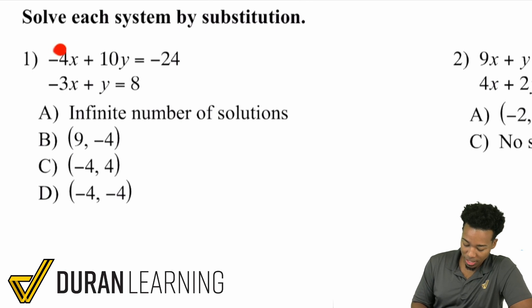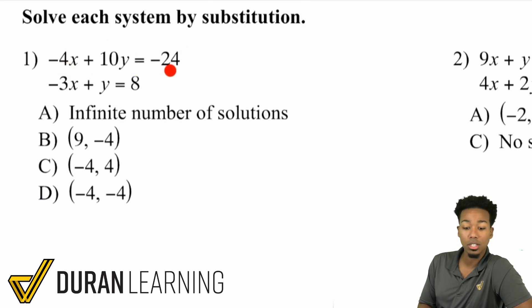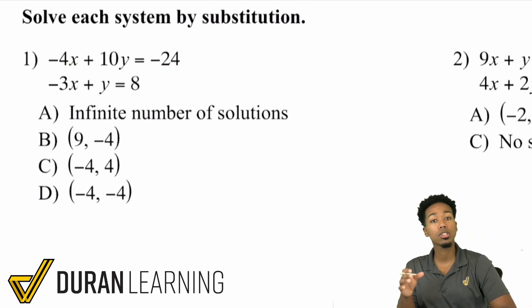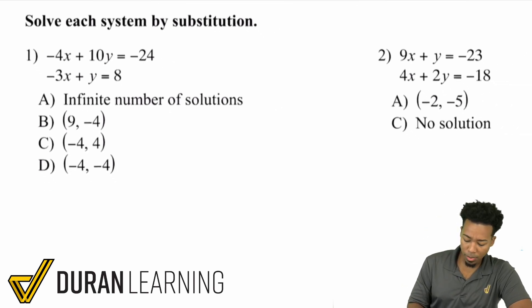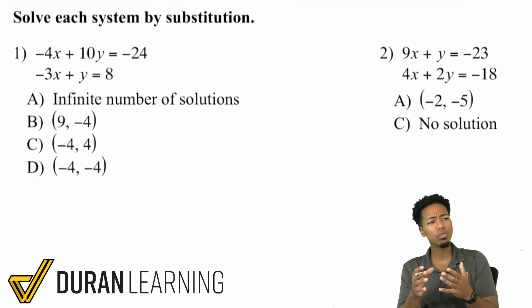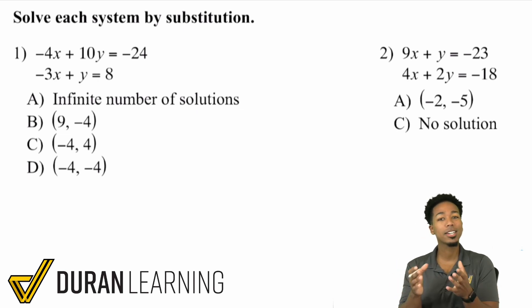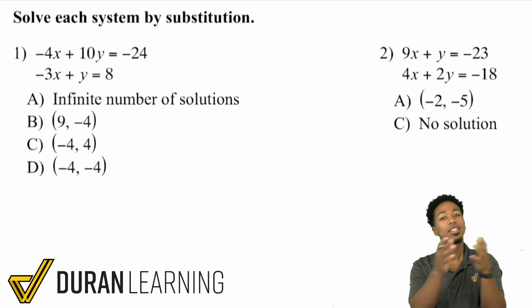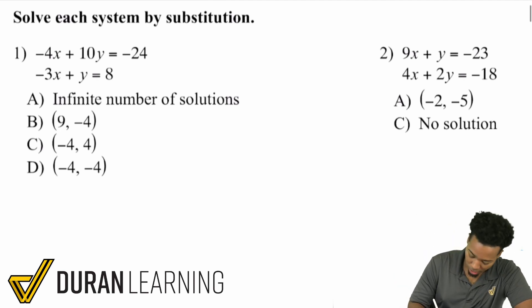We have negative 4X plus 10Y equals negative 24, and we also have negative 3X plus Y equals 8. The point here is to use substitution. When it comes to substitution, the main idea is that we get one of those variables by itself so that we can substitute it into the other equation.